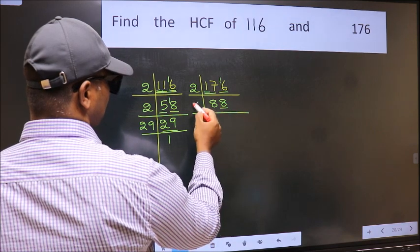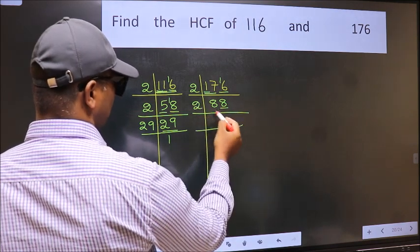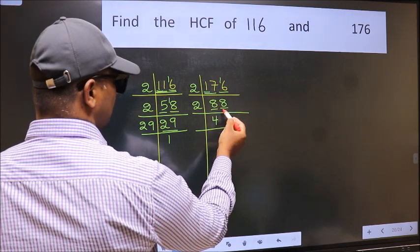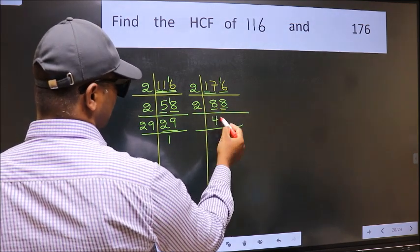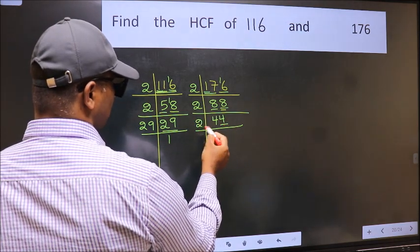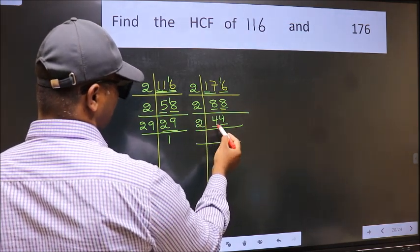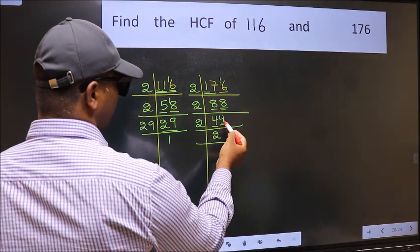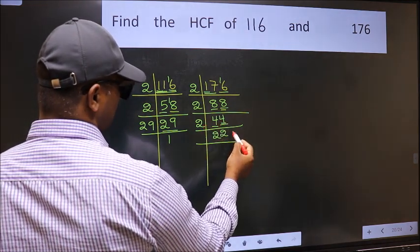Last digit 8, even, so take 2. First number 8, when do we get 8 in 2 table? 2×4=8. The other number 8, when do we get 8 in 2 table? 2×4=8. Last digit 4, even, so take 2. First number 4, when do we get 4 in 2 table? 2×2=4. The other number 4, when do we get 4 in 2 table? 2×2=4.